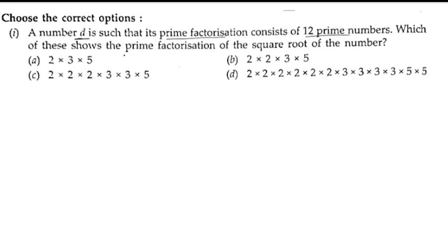We have to check which of the following represents the prime factorization of the square root, and it should have 12 prime numbers. First, we'll see option A: 2×3×5. There are only 3 factors, and it is not a square number.